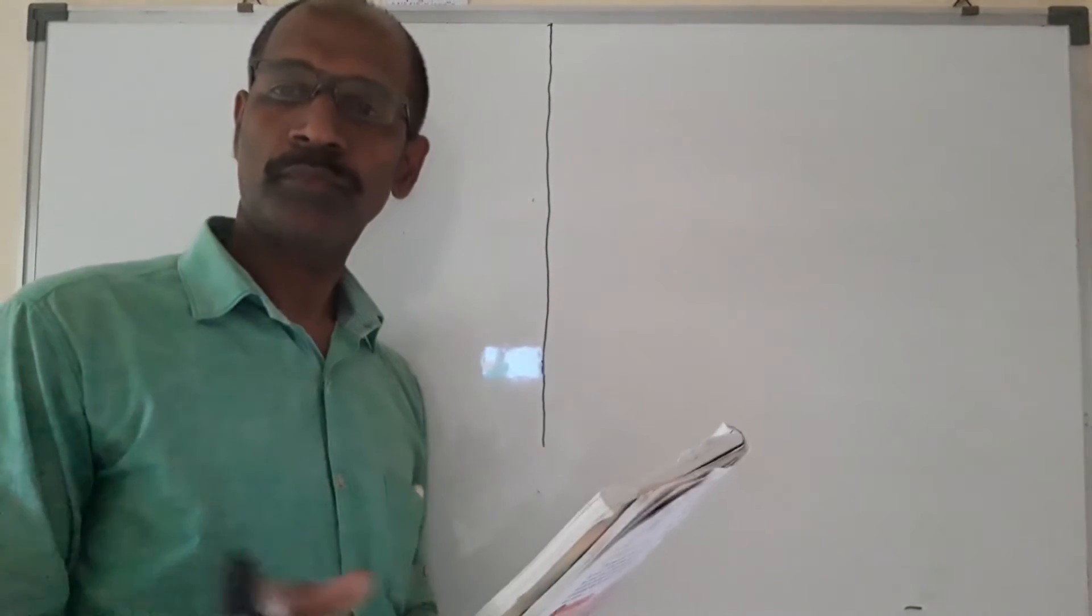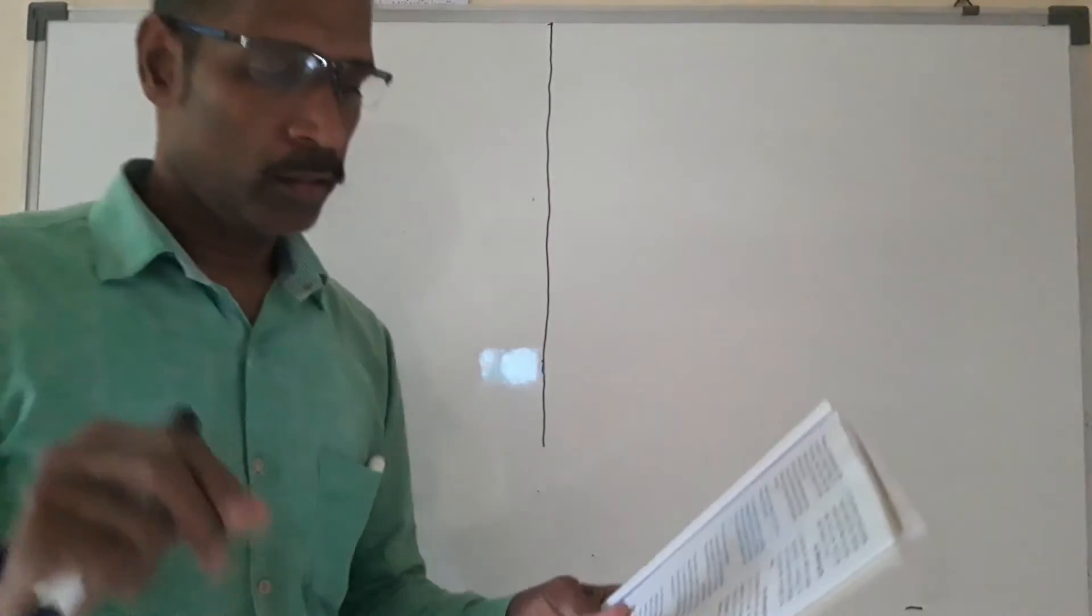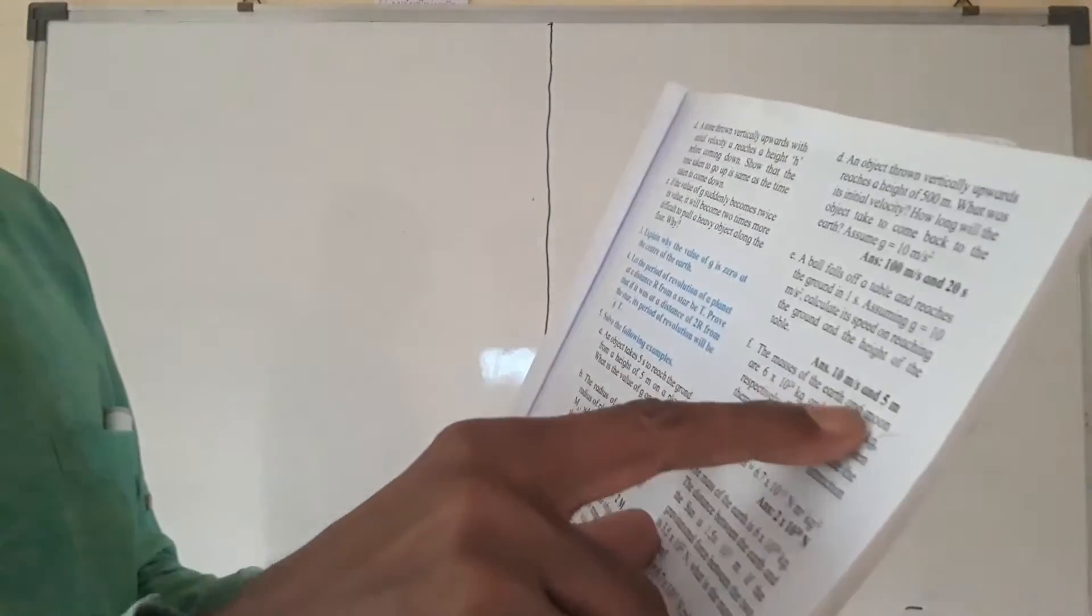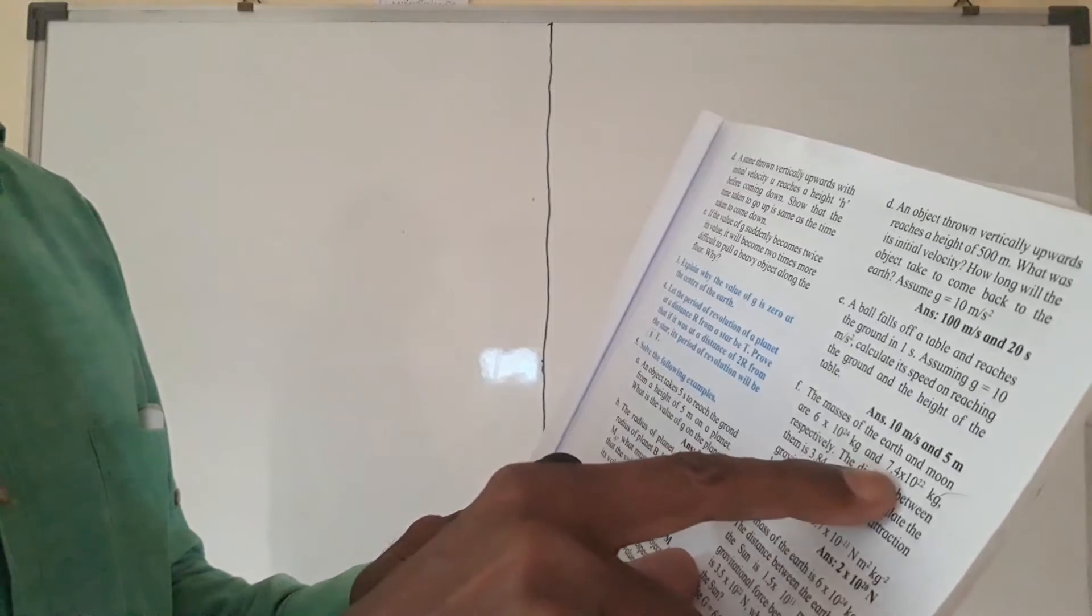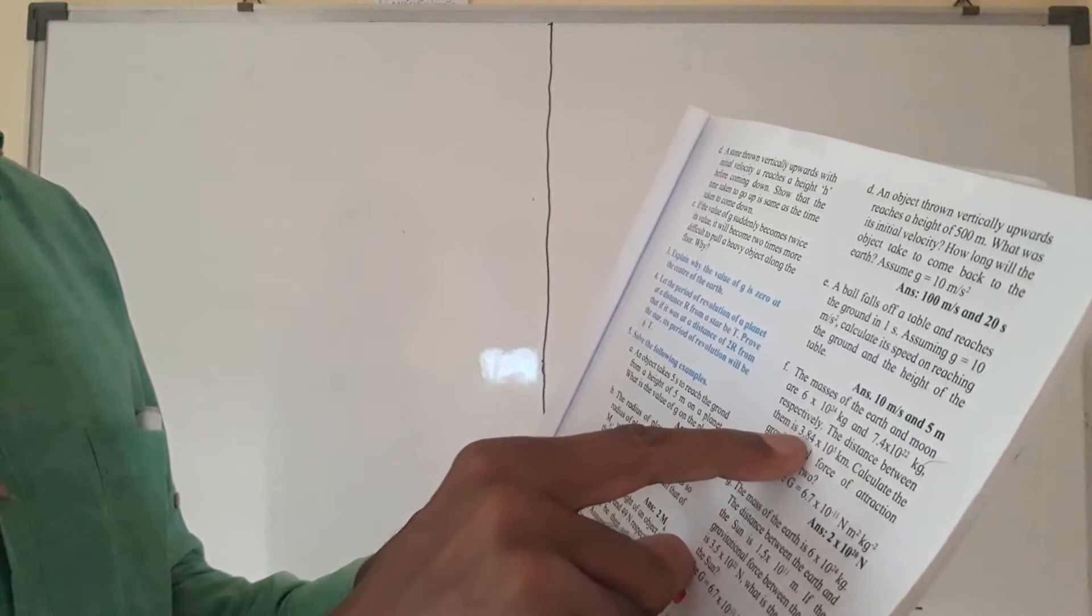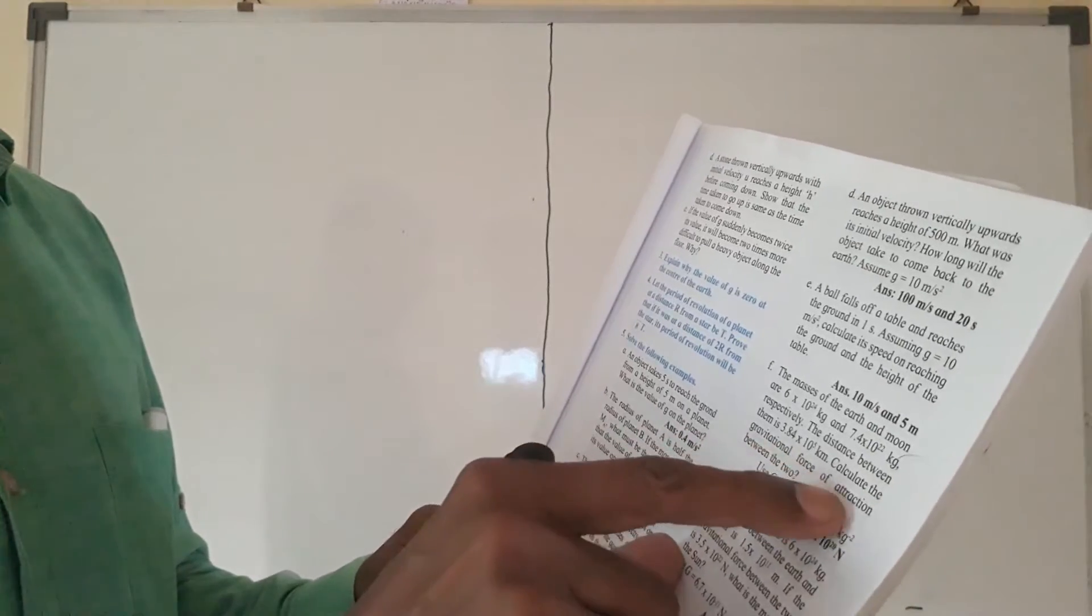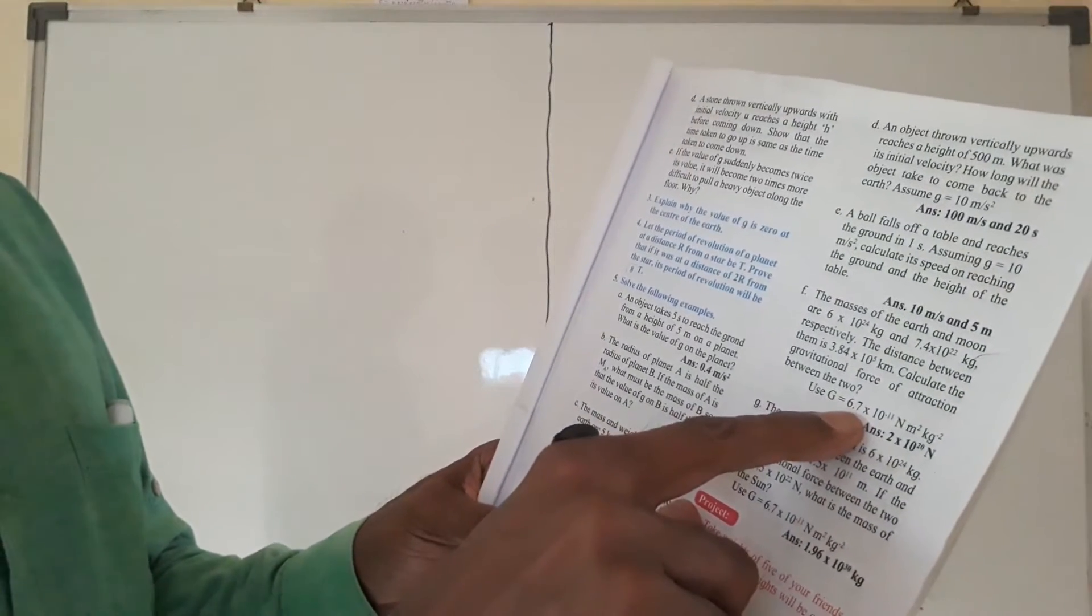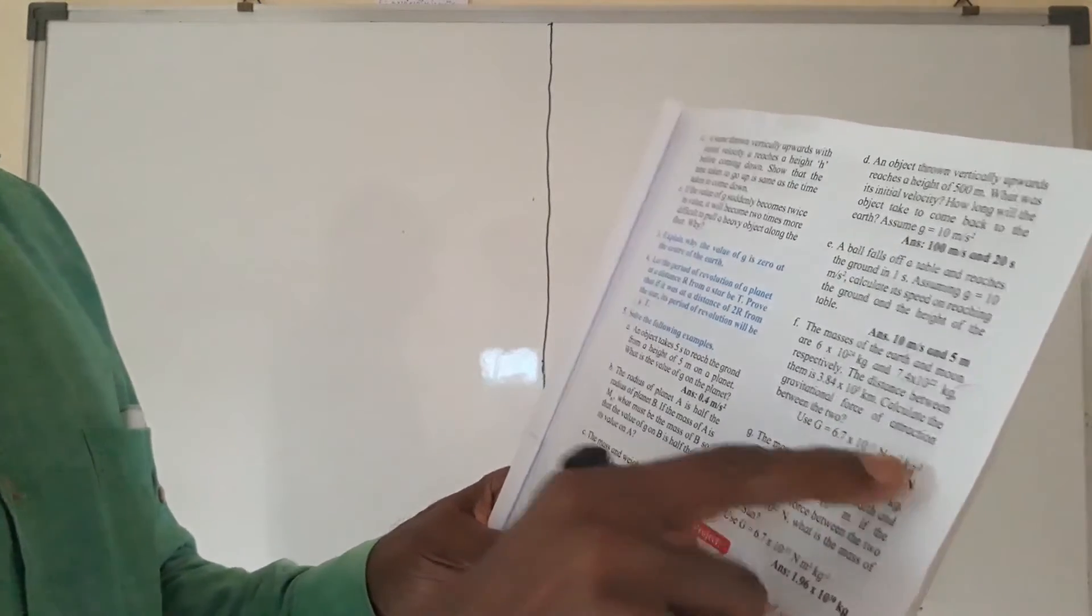Hello friends, science part first, gravitation. From this gravitation, numerical six: The masses of the earth and moon are 6 into 10 raise to 24 kg and 7.4 into 10 raise to 22 kg respectively. The distance between them is 3.84 into 10 raise to 5 kilometer. Calculate the gravitational force of attraction between the two. Here G is also given: G is equal to 6.7 into 10 raise to minus 11 newton meter square per kg square.